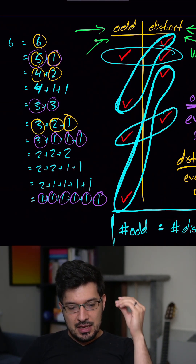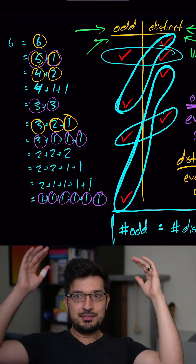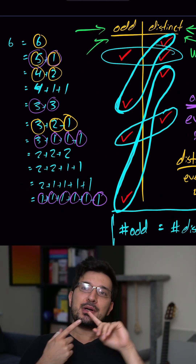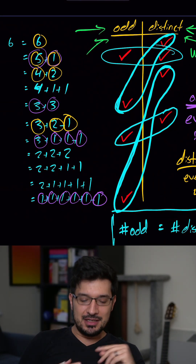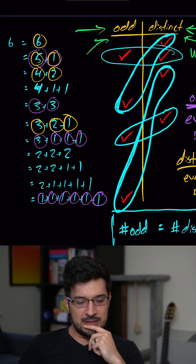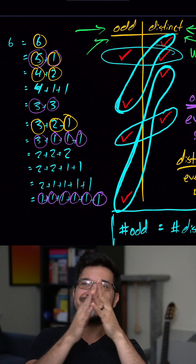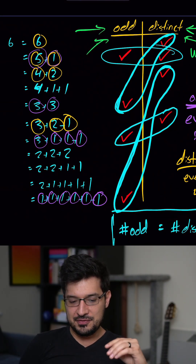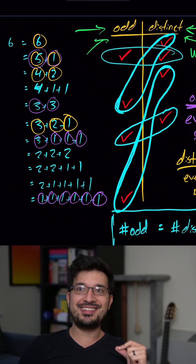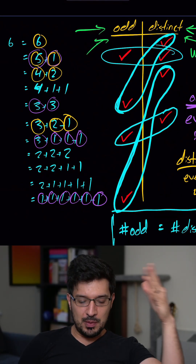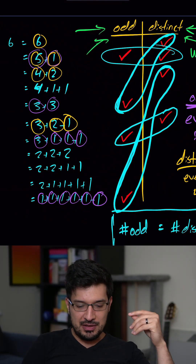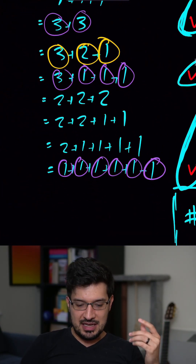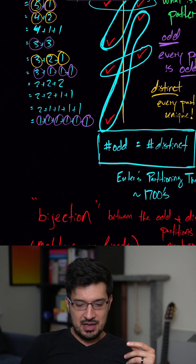An odd partition only has odd parts. A distinct partition has unique, distinct parts. So six is distinct, five plus one is both distinct and odd, four plus two is distinct, three plus three is odd, and three plus two plus one is distinct, and so on.